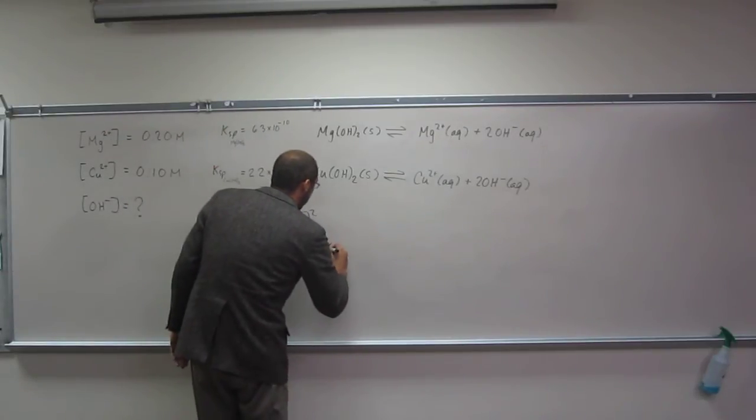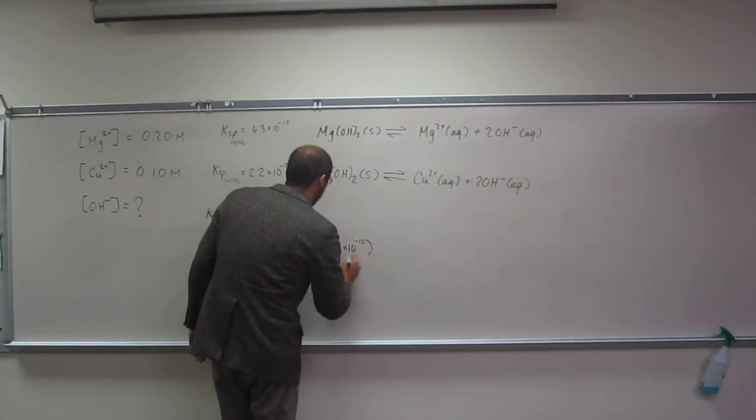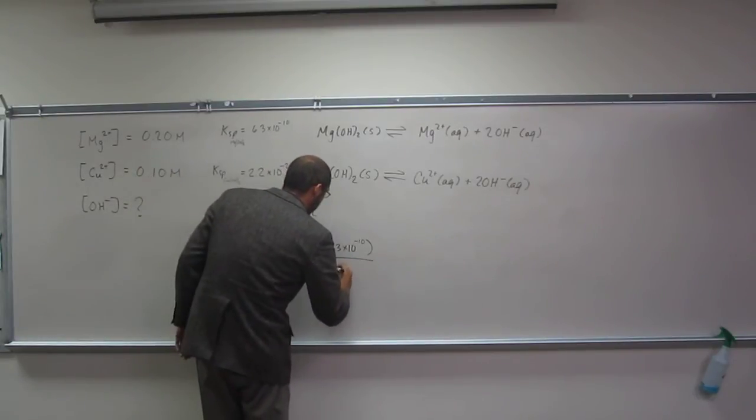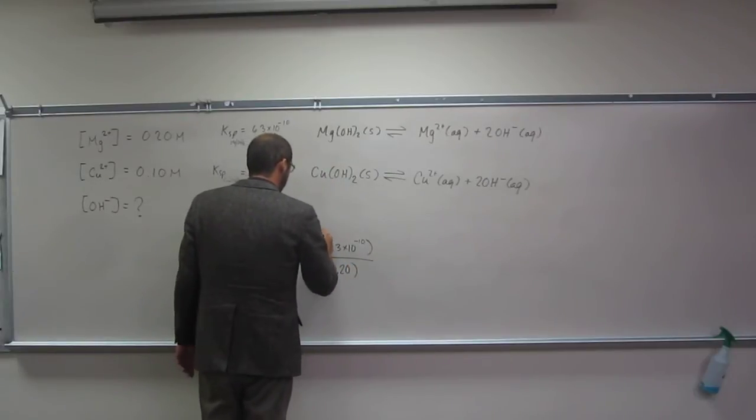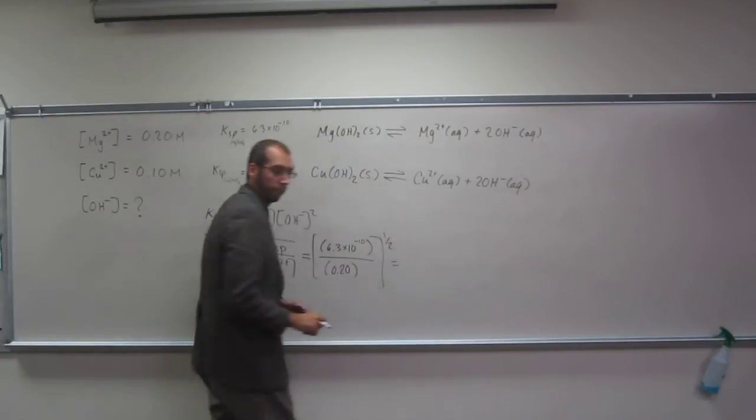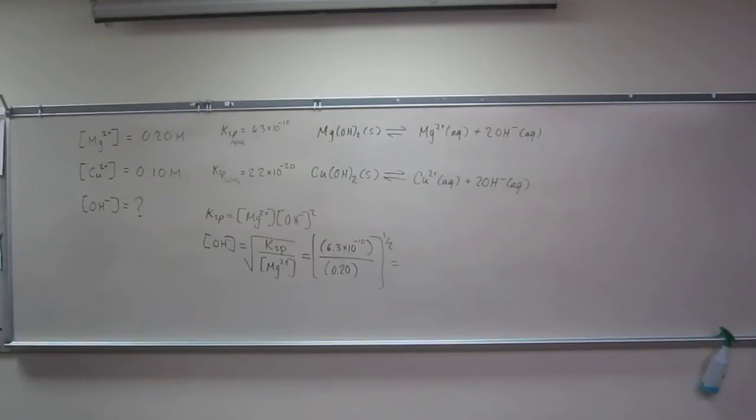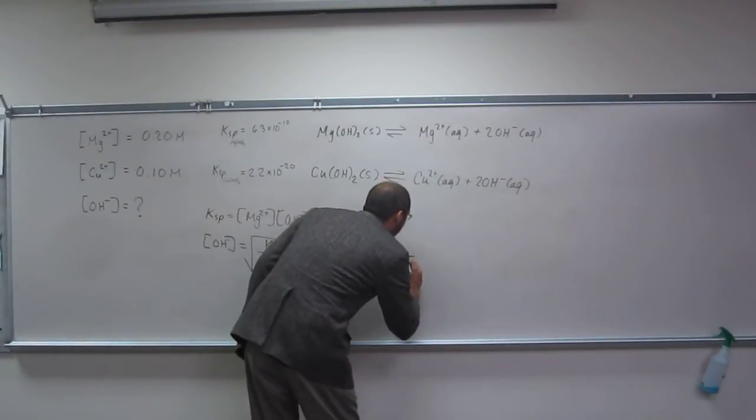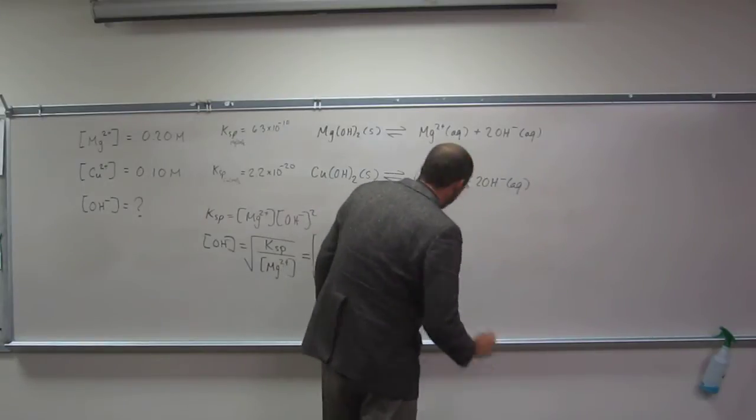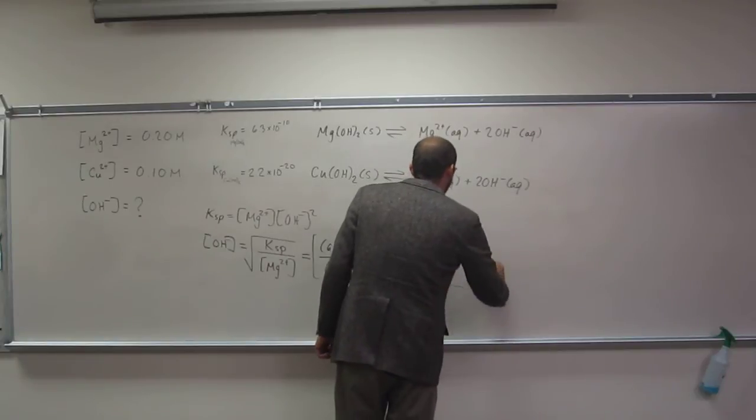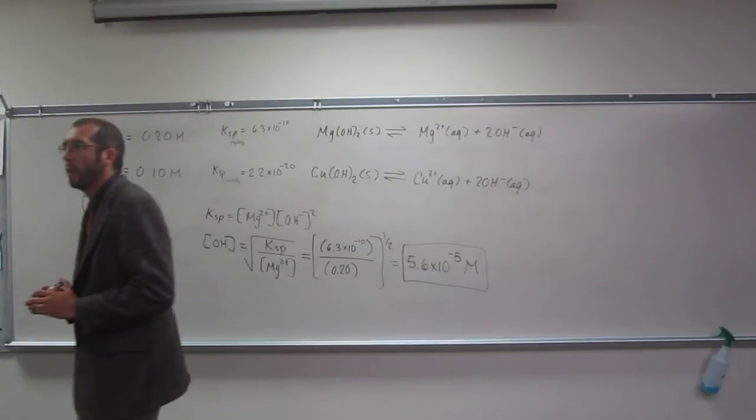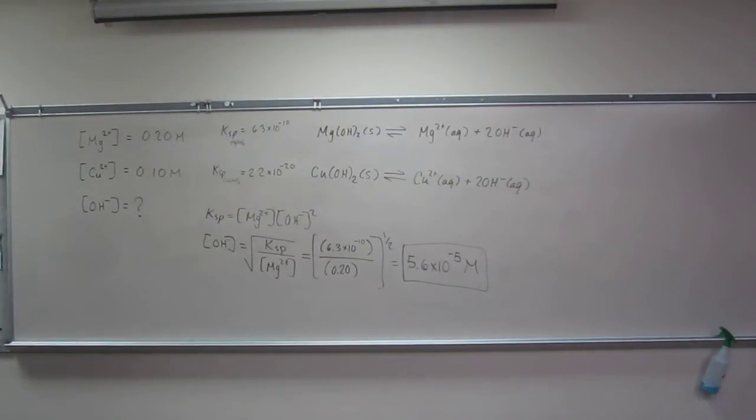Ksp is 6.3 times 10 to the negative 10 divided by 0.20, all raised to the one-half. I get 5.6 times 10 to the negative 5 molar. That is the maximum amount of hydroxide ion you can add before magnesium hydroxide will start precipitating.